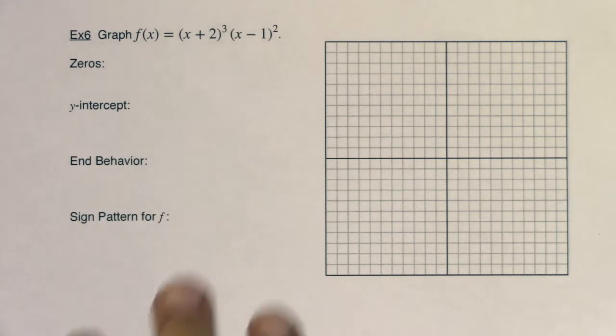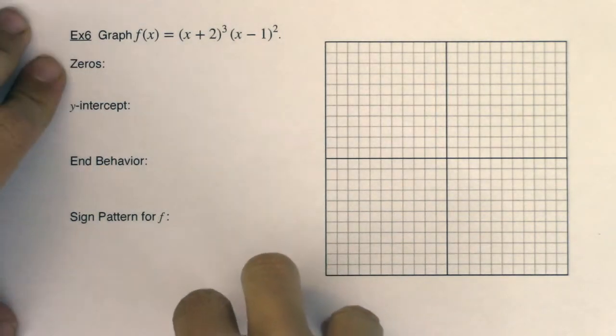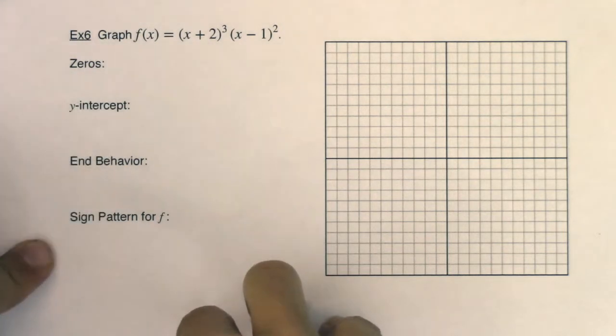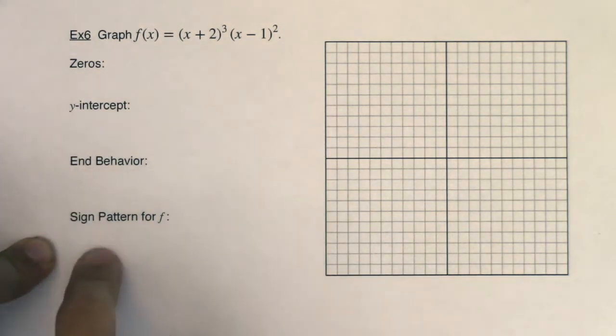Hey Math 31! We're going to graph yet another polynomial. We'll talk about zeros, y-intercepts, end behavior, and I'm going to introduce this topic or this idea called a sign pattern.